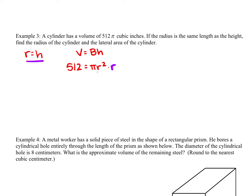Multiplying those together gives us 512 equals pi r cubed — actually it's 512π equals pi r cubed. Since we have pi on both sides, we cancel them out. To get r by itself, we take the cube root of both sides because we have r cubed. The cube root of 512 is 8, so our radius equals 8 inches.